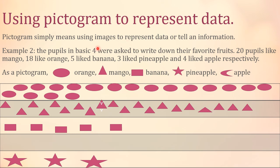Example: pupils in Basic Four were asked to write down their favorite fruits. 20 pupils liked mango, 18 liked orange, 5 liked banana, 3 liked pineapple, and 4 liked apple. In the pictogram: the circular shape represents orange, the triangular shape represents mango, the rectangular shape represents banana, the star shape represents pineapple, and the crescent moon shape represents apple.